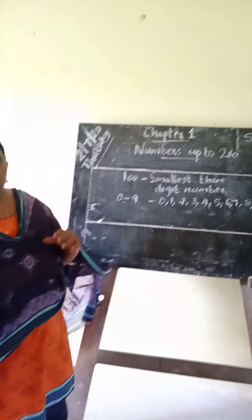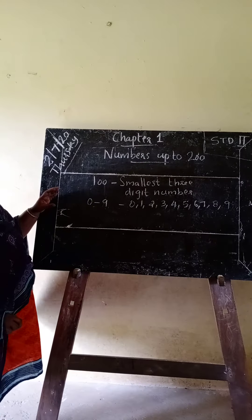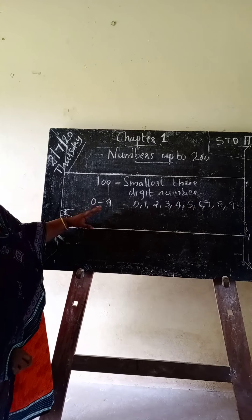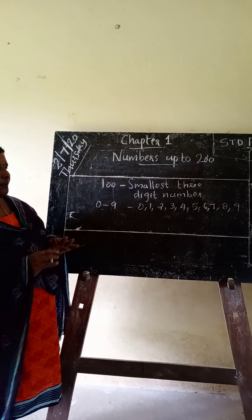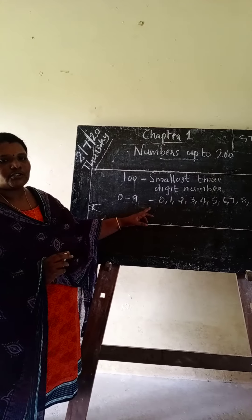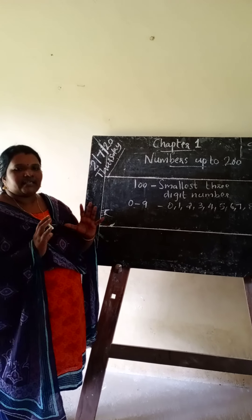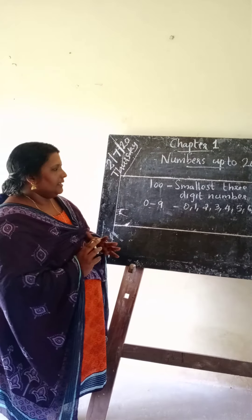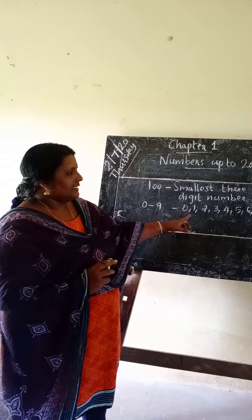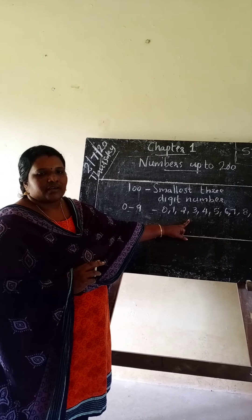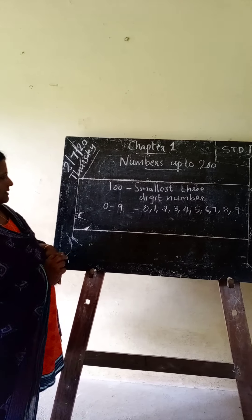8 and 9 are called digits. Using these digits, we can make big numbers.